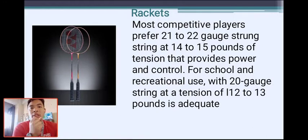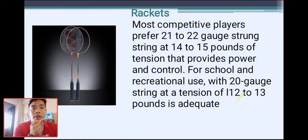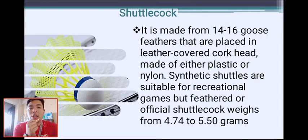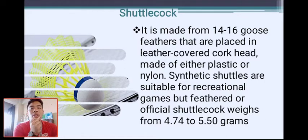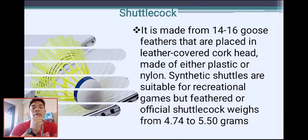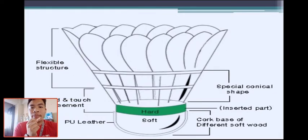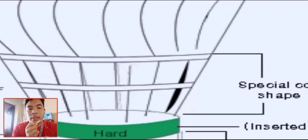The shuttlecock is made of 14 to 16 feathers placed in a leather-covered cork head made of either plastic or nylon. Synthetic shuttles are suitable for recreational games, but feathered or official shuttlecocks weigh from 4.74 to 5.50 grams. The cork base is the lower part and the feathers form the upper layer.